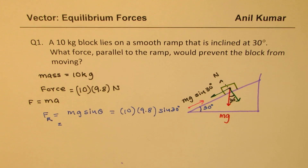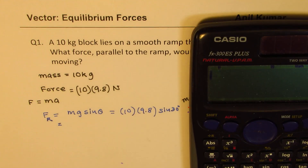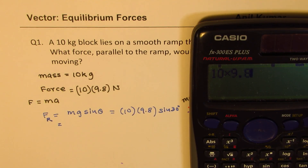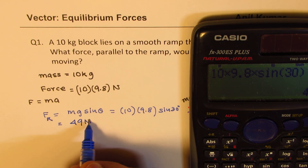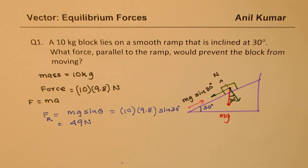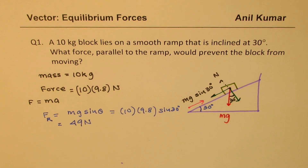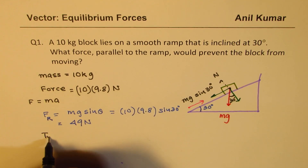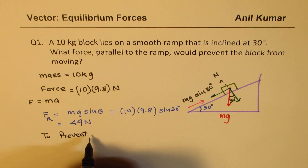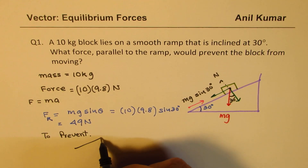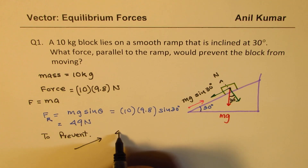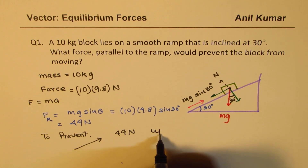Since sin(30°) = 0.5, that gives us 5 × 9.8. Using the calculator: 10 × 9.8 × sin(30°) = 49 Newtons. So 49 N is the force acting along the inclined plane in that direction. To prevent motion, we apply the same magnitude — 49 Newtons — but up the incline.